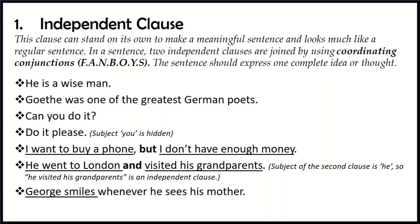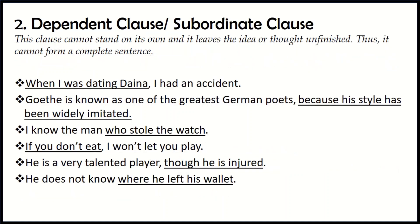But take the sentence 'George smiles whenever he sees his mother.' 'George smiles' is a clause because there is subject plus verb. But if I say 'whenever he sees his mother' on its own, this doesn't complete a thought. So this is actually called a dependent clause. A dependent clause or subordinate clause basically is a clause which does not complete a thought. The idea or thought is incomplete and unfinished, so it cannot form a complete sentence.